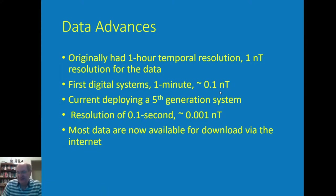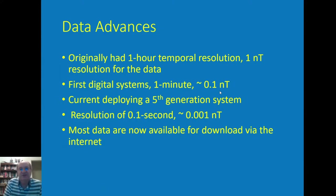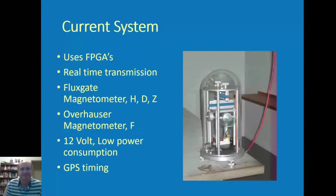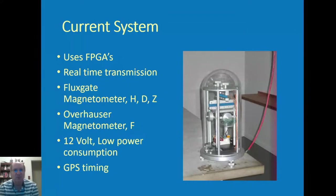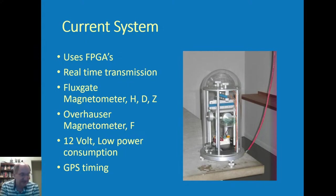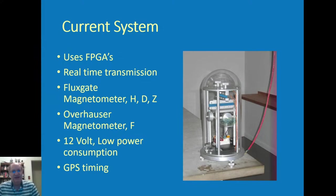There are several different places where data can be obtained. The current data collection system uses FPGAs — field programmable gate arrays — they're really not computers, which makes them a little easier to deal with. We can get real-time or near real-time transmission of our data. We still have a fluxgate magnetometer oriented such that we get the horizontal, declination, and vertical components of the field. It uses an Overhauser magnetometer, which has an absolute accuracy of one-tenth of a nanotesla.